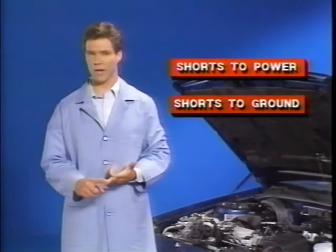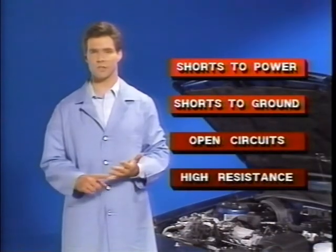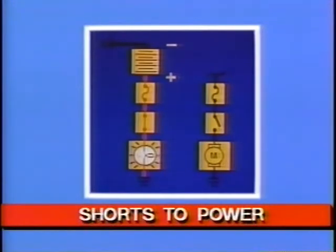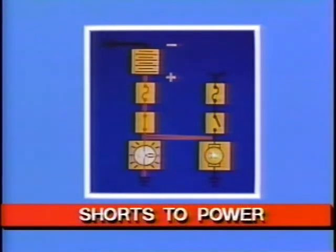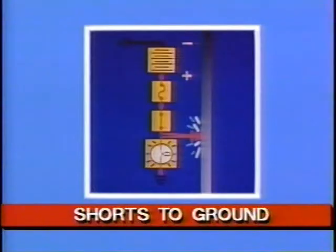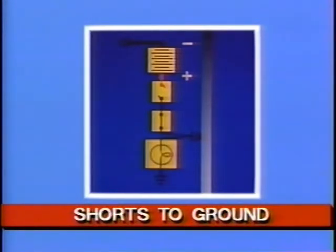Now let's take a look at the kinds of electrical problems you'll be dealing with. The list includes shorts to power, shorts to ground, open circuits, and high resistance. A short to power occurs if the insulation between two circuits gets pinched or wears through — when the two conductors touch, current from one circuit enters the other, causing a cross-feed that activates components in the wrong circuit. A short to ground is characterized by a sudden increase in current flow because part of the circuit is bypassed. Current flow is well beyond the ability of the wire to carry it. Fortunately, if the circuit is protected, the protection device will stop current flow before substantial damage can occur.